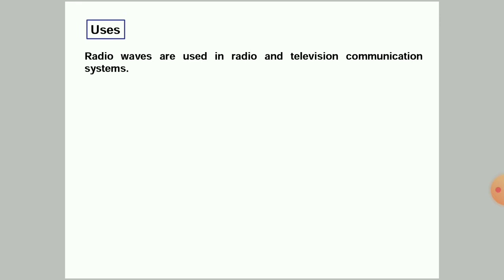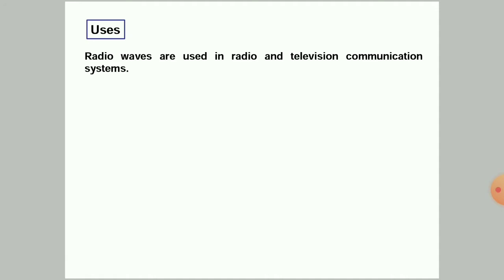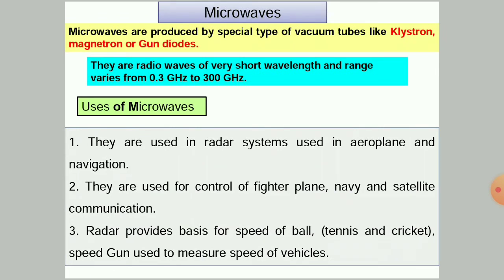Radio waves are used in radio and television communication systems. Now, microwaves are produced by special types of vacuum tubes like a klystron, magnetron, and gun diodes. They are radio waves of very short wavelength, with a frequency range from 0.3 gigahertz to 300 gigahertz. The uses of microwaves: first, they are used in radar systems used in aeroplanes and navigation.